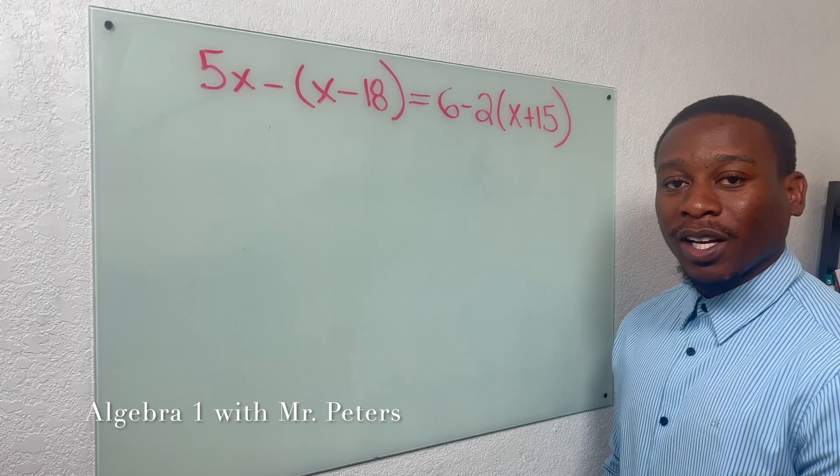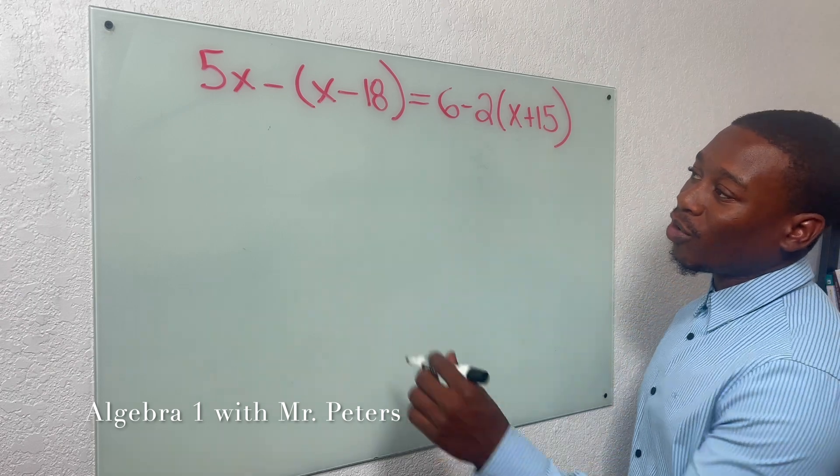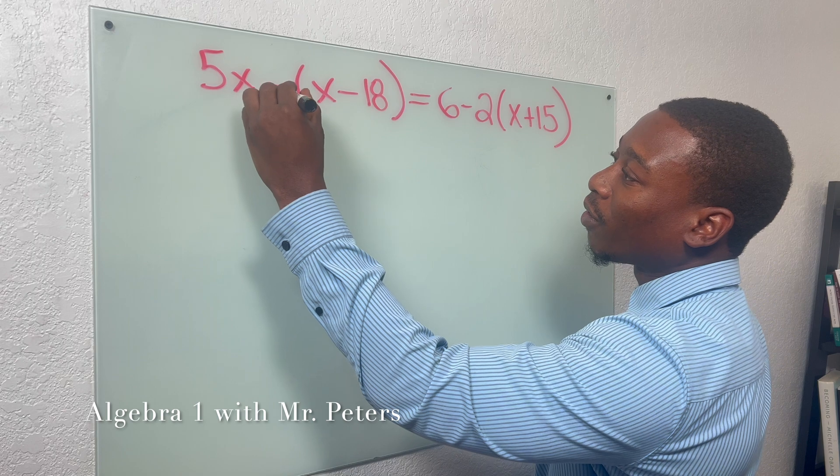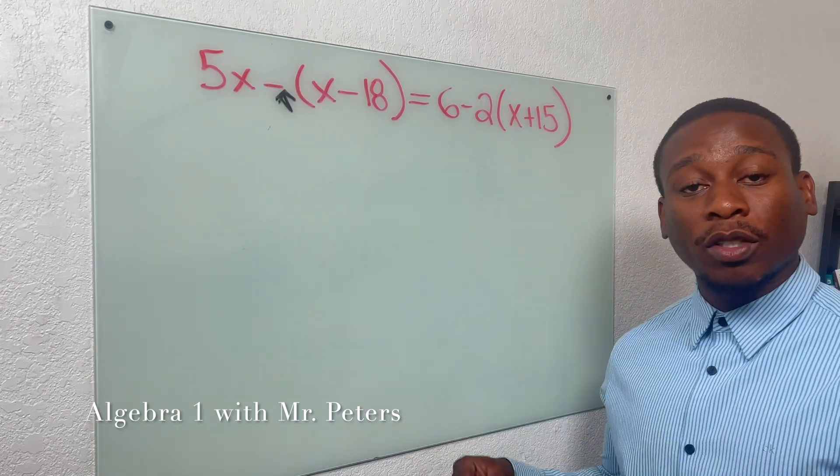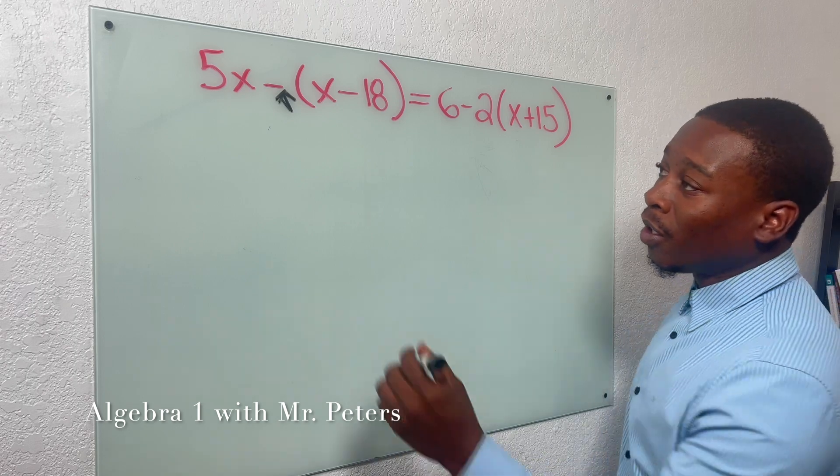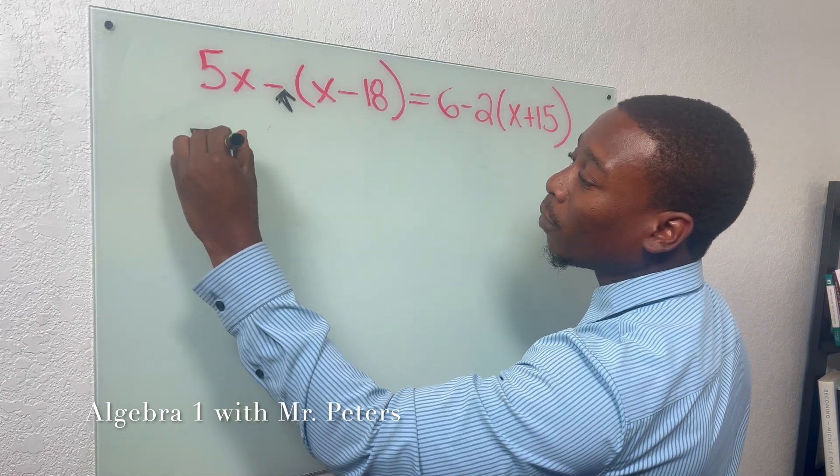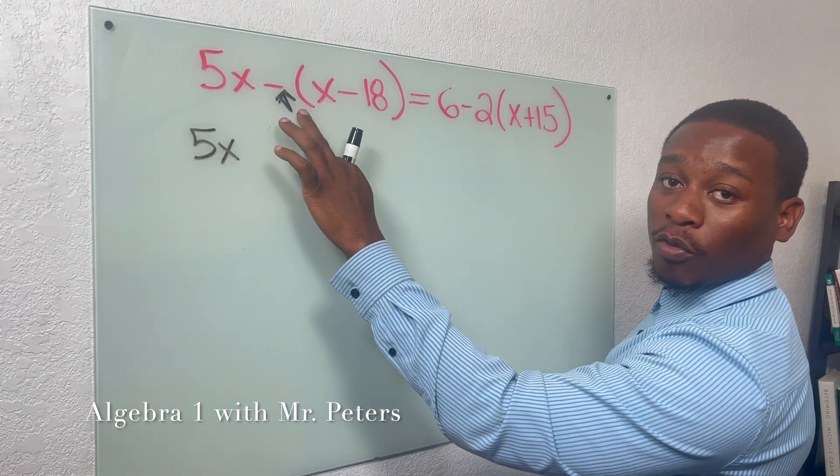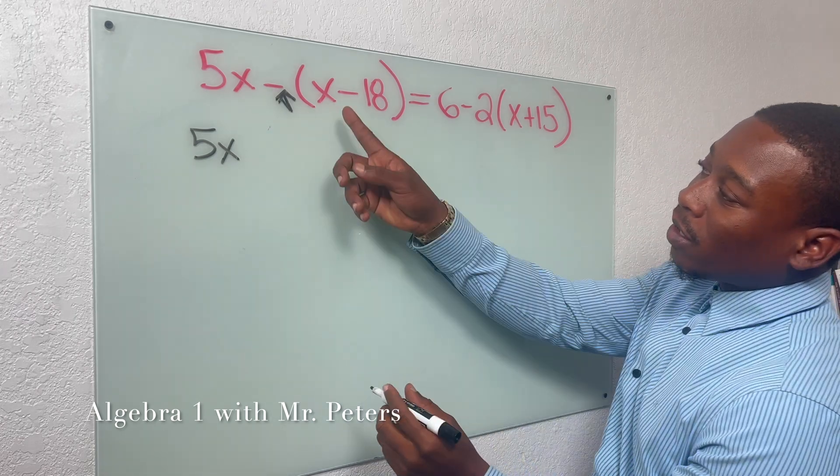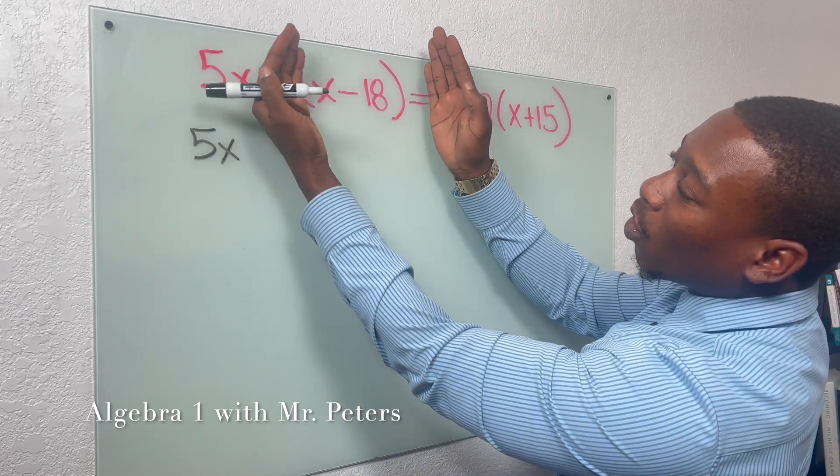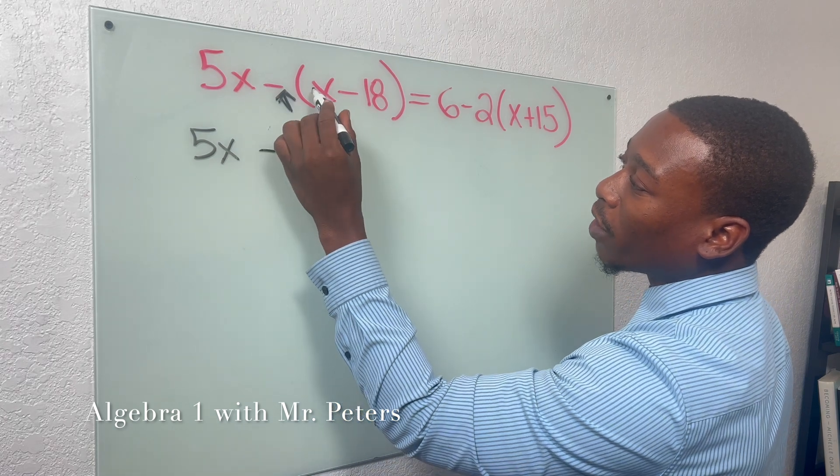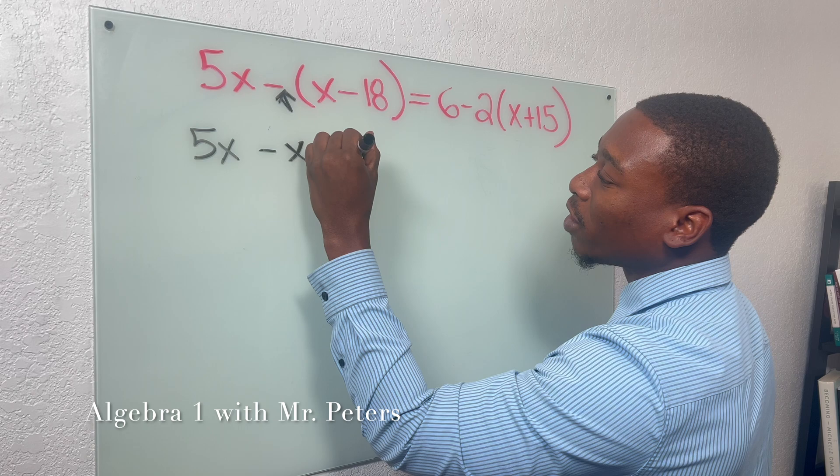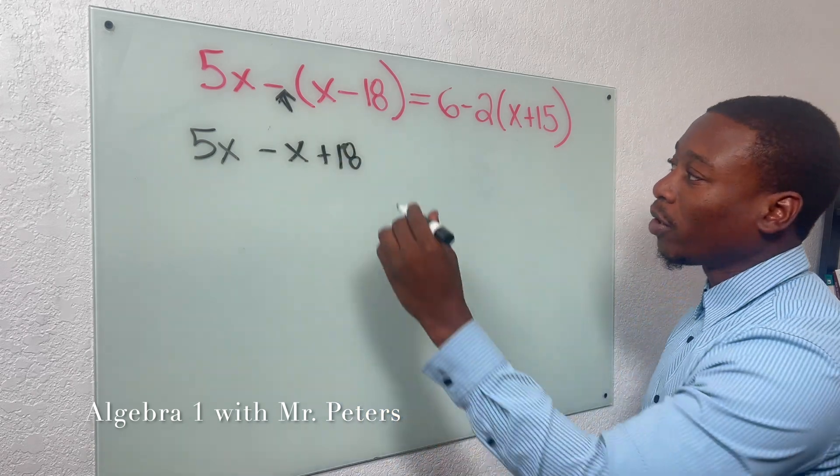So in our second example, there's a few things that I'm going to touch on. So number one, let's pay attention to here. When you see something like this, we still have to follow the principle of distributing. So 5x stays the same, but imagine this was a negative one here. What's going to happen is we pay attention to the signs only inside of parentheses. x becomes negative because it's positive inside. 18 becomes positive because it was negative inside of parentheses.